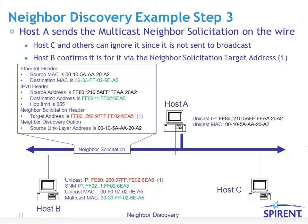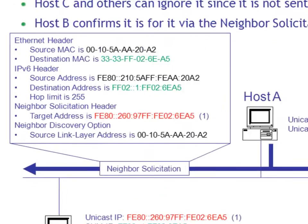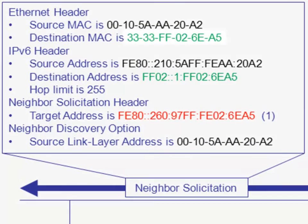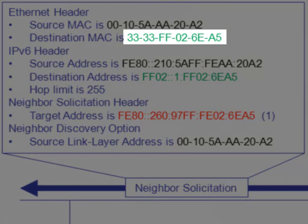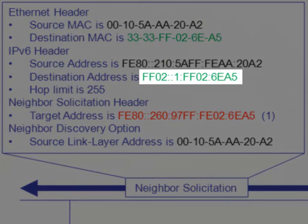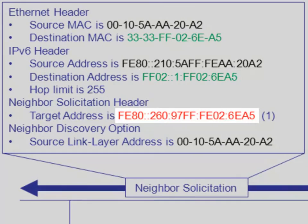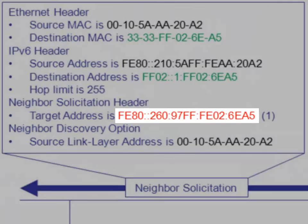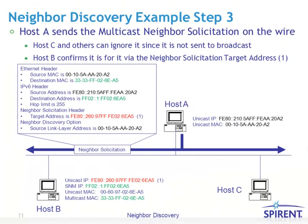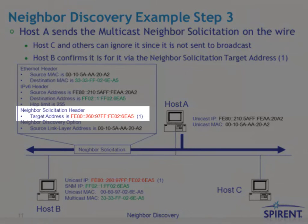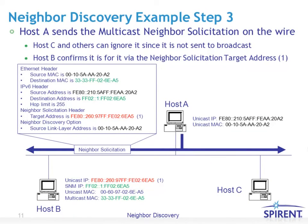Step three: now that host A has determined all the information it needs, it sends the multicast neighbor solicitation onto the wire. The packet propagates in all directions, so both host B and C will see it, but only host B will be listening to destination MAC address 3333-FF02-60-A5, which was derived from host B's SNM address, which was derived from host B's unicast IP address. Host B reads the packet and can double-check the target address in the neighbor solicitation header to confirm the FE80 address is indeed for host B.